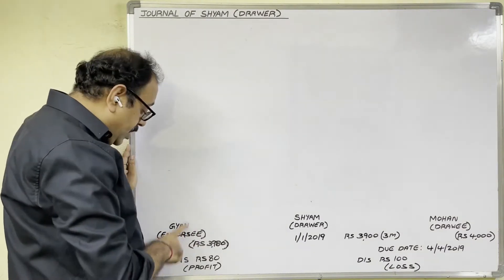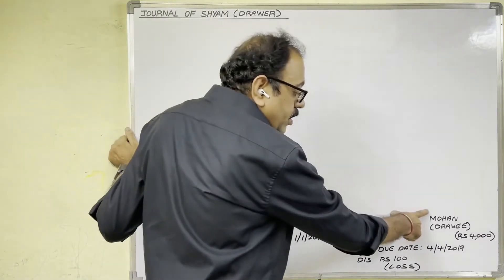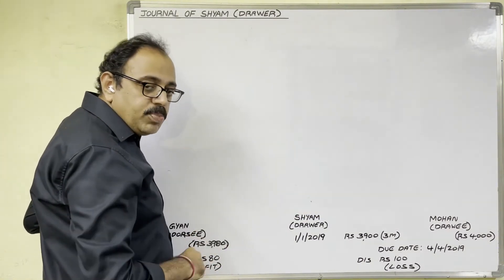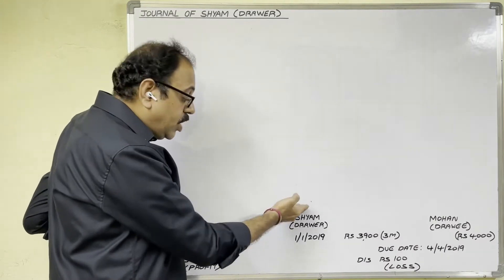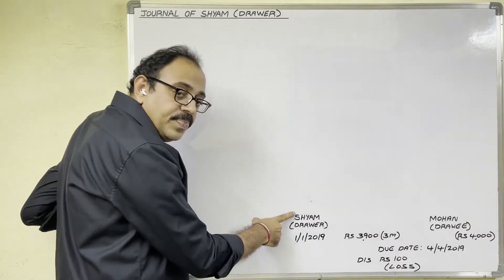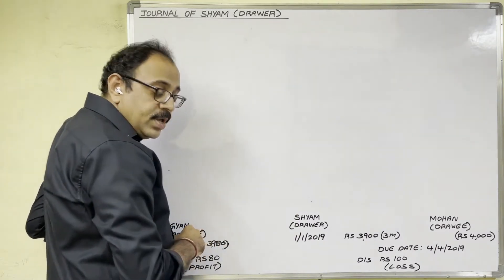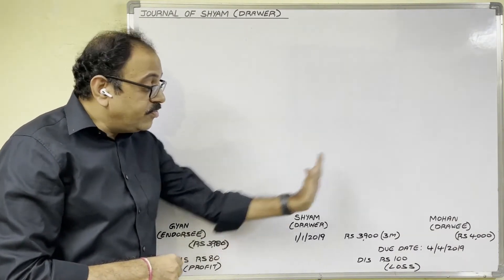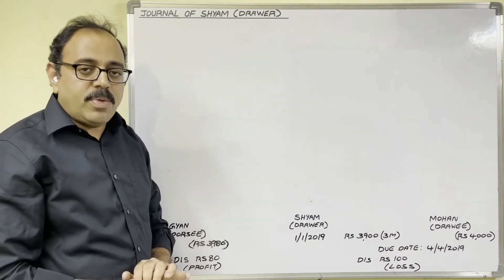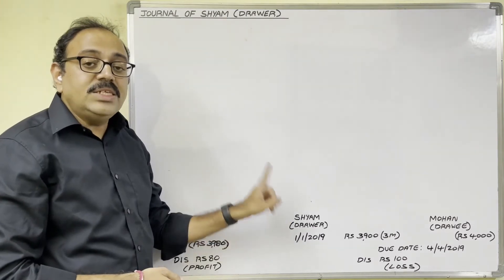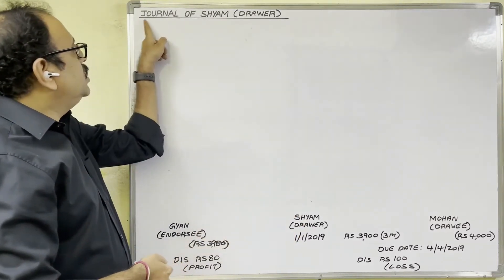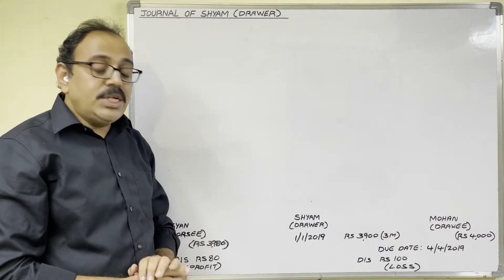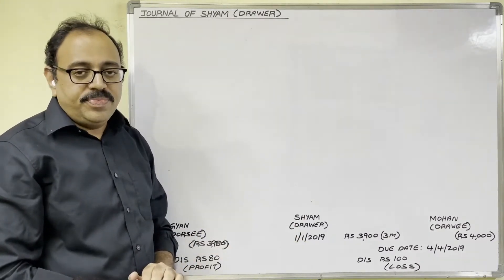On the due date, the bill is with Gnan, so Gnan went to Mohan — but Mohan dishonored the bill and failed to pay the amount. Then who becomes the next responsible person? Sham. Because Mohan failed to pay, Gnan goes to Sham. From Sham's point of view, he has to pay Gnan, and he should collect that amount from Mohan. For this problem, journal entries are required in the books of Sham, who is the drawer.